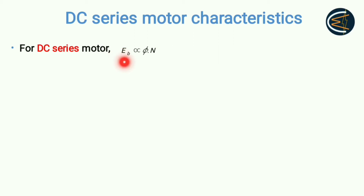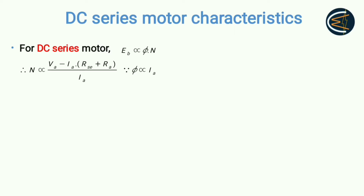For the DC series motor, the back EMF is directly proportional to flux per pole multiplied by speed (Φ × N). In the case of DC shunt motor the flux is constant, but here flux is not constant. After some modification you get a relationship where speed is directly proportional to a certain term, because in the DC series motor flux is directly proportional to the armature current.